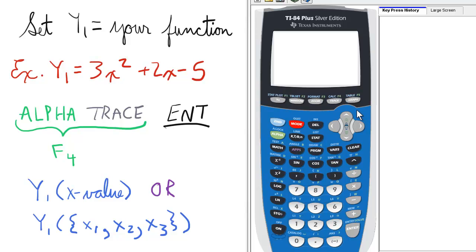To find the y value of a set x value for a function, first go to the y equals screen, set y1 equal to the function you're interested in. In this example it's 3x squared plus 2x minus 5.